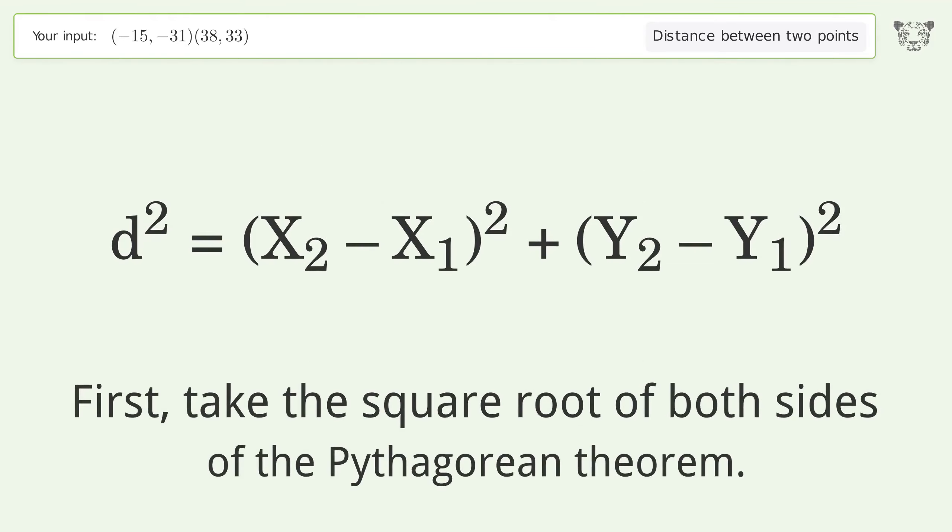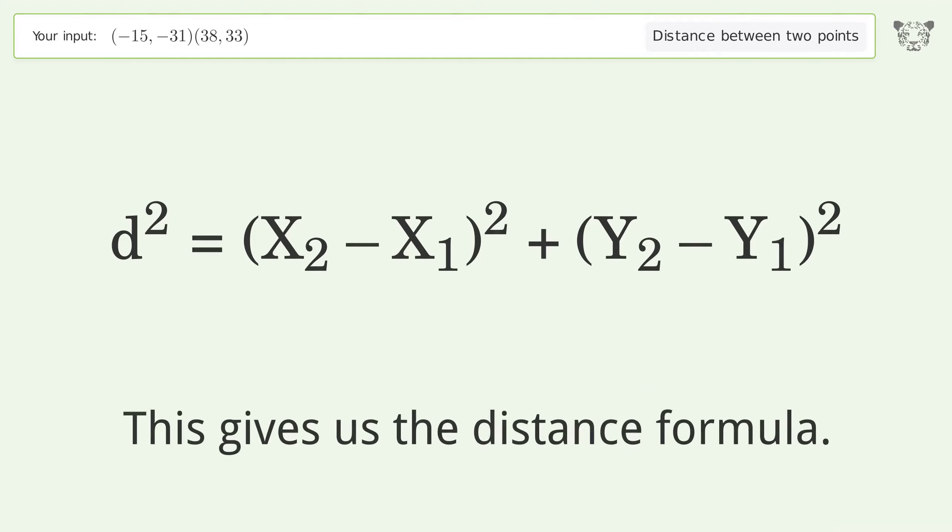First, take the square root of both sides of the Pythagorean theorem. This gives us the distance formula.